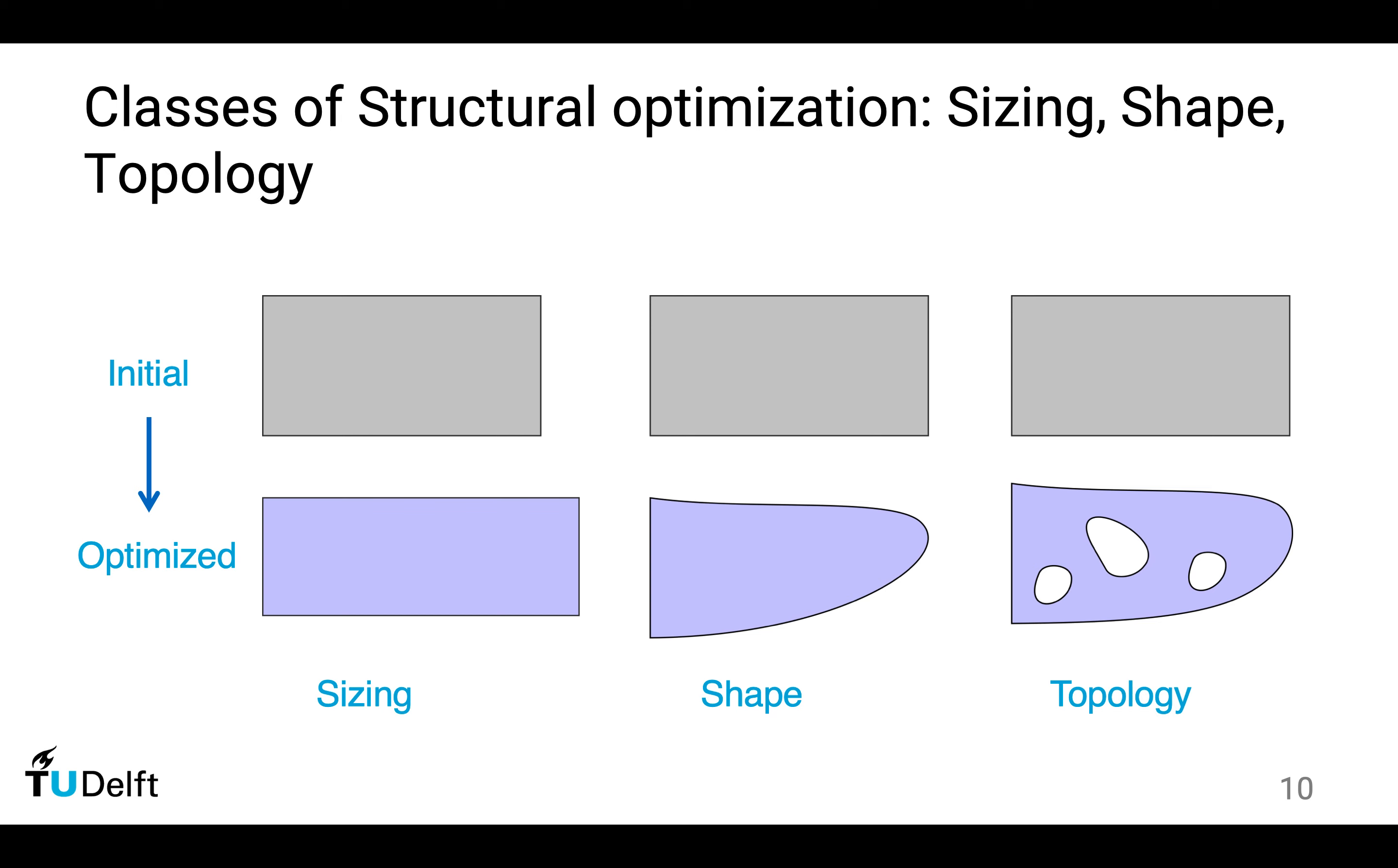Let's say we have a rectangular component we want to optimize for some purpose. You could optimize the dimension. For instance, you make it longer, you make it shorter. This is called sizing, so you modify the size of the component.